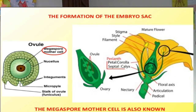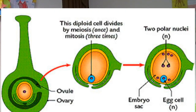Note that in plants, unlike animals, the gametes are not formed directly by meiosis. Instead, meiosis is used in the production of pollen grains and the embryo sac, and the gametes are then formed inside these structures by mitotic division.